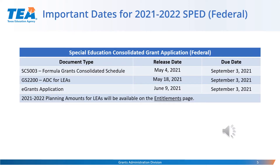Here are some schedules that need to be completed prior to completing the application. The application schedules will need to be completed in the order they are presented: SC5003 first, followed by the ADC. Once those are completed, you will have access to the grant application. Once planning amounts are calculated and become available, they will be posted on TEA's Entitlements page. There is a document titled Important Dates for 2021-2022 on TEA Grants Administration's Grant Resources page, which includes information for ESSA, SPED State, Perkins V for LEAs, and Perkins V Institutions.